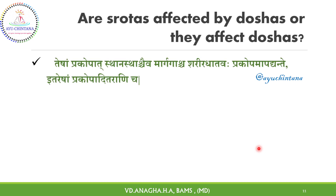Teshaam Prakopat Sthana Sthaschaiva Margagascha Shariradhatavaha Prakopamapatyante Itareshaam Prakopat — Teshaam Prakopat means Doshanam Prakopat. Sthana Shaya and Vridhi are three Gatis of Dosha. Please refer back to Charakasutra 11 and Charakasutra 18 to get concept clarity. Here, one of the Doshagatis, i.e. Sthana, if altered, brings major change in Dhatus.